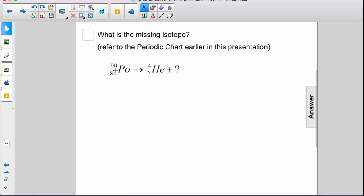Well, first of all, the total atomic mass number must still add up to 190. Therefore, we must have a particle with atomic mass number 186.